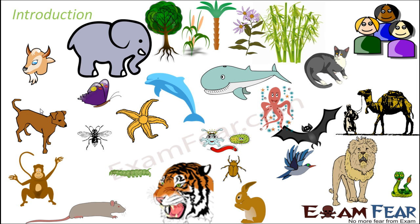In this lesson, we are not going to talk about these different living organisms because we have already done that in our previous lesson. By now you all know the different kingdoms to which each of these fall and the characteristics of those kingdoms. What we are going to focus on in this lesson is: why do we want to conserve these many varieties of living organisms?